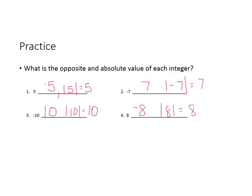You've probably figured out by now that the absolute value of five and the absolute value of negative five are both equal to each other. The absolute value of negative five is five, and the absolute value of positive five is five — so they would be the same.